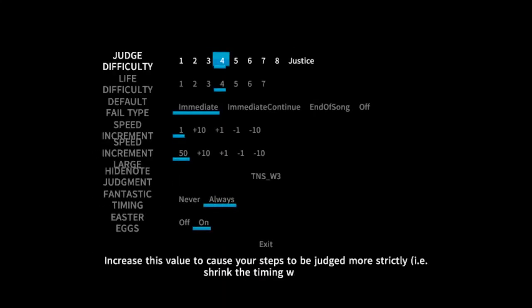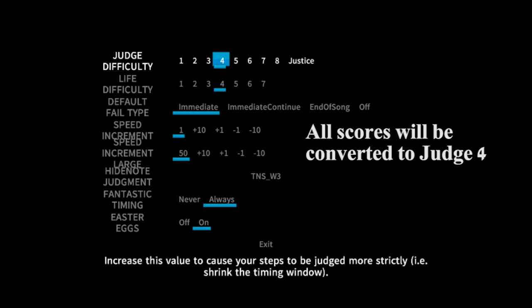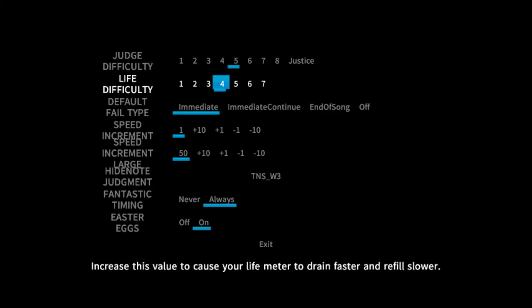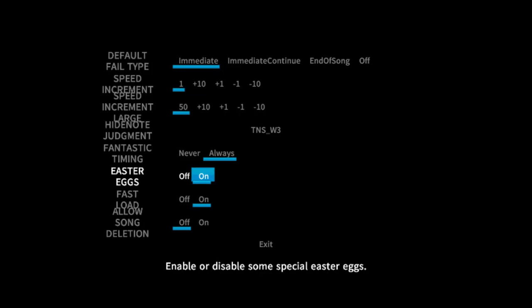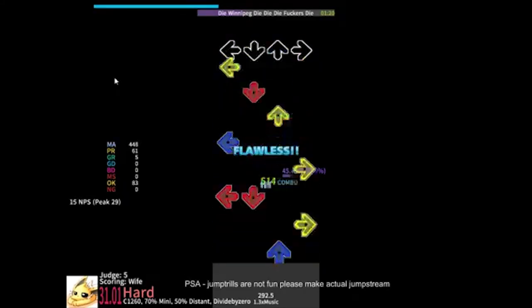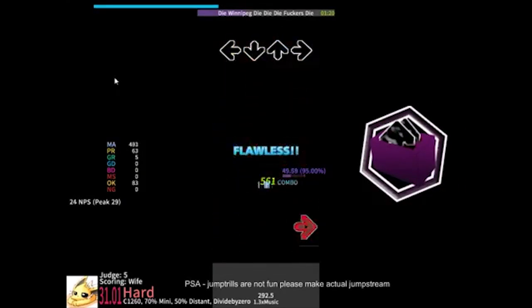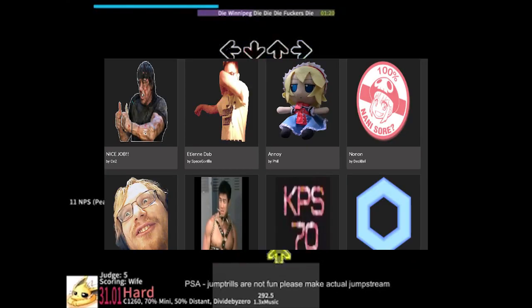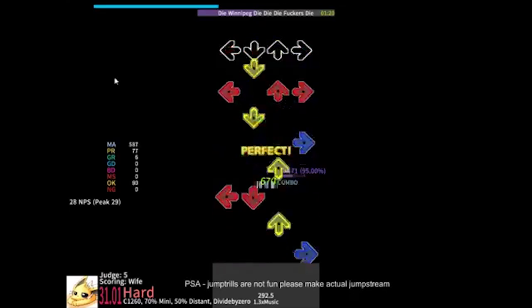Last in the options list, we have the advanced options. The judge in life will be at 4 by default, as all scores are converted to Judge 4 no matter what judge you play on. Feel free to adjust them higher, but anything lower will hurt your scores drastically. Easter eggs are simply what are called Toasties — a very old easter egg that when you hold a combo with a certain amount of accuracy, something will pop out of the screen, originally someone saying 'Toasty.' Some of these are available on the Eterna website as well, but you can turn them off if you find them distracting.